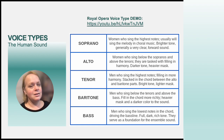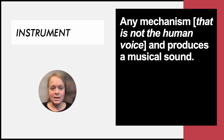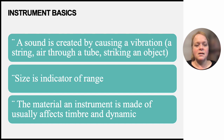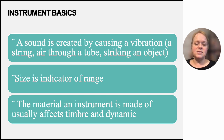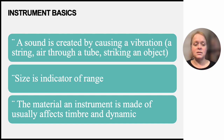An instrument is any mechanism that is not the human voice that produces a musical sound. Instrument basics: sound is created by causing a vibration — a string, air through a tube, or striking an object. Size is an indicator of range — the smaller the instrument, the higher it is; the bigger, the lower. The material of an instrument generally affects the timbre and dynamics. Brass instruments have a more resonant, brighter sound and can be louder than wooden instruments.